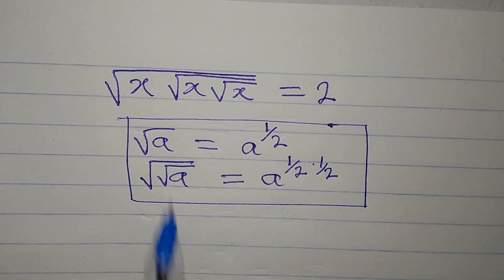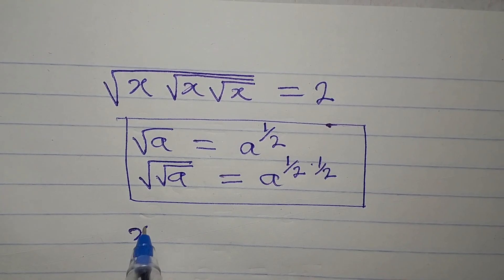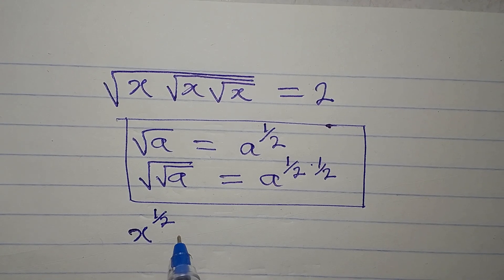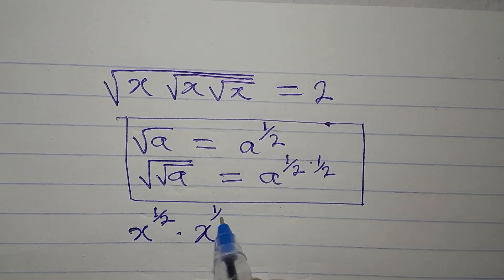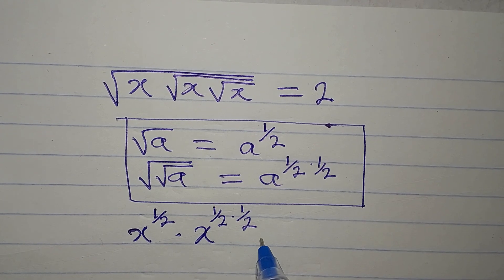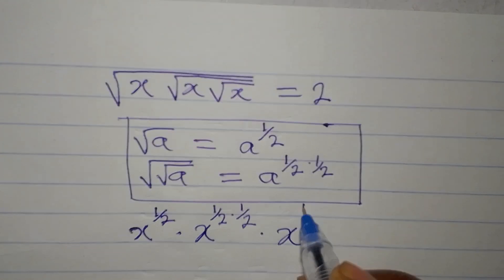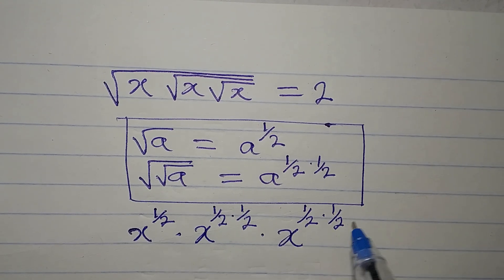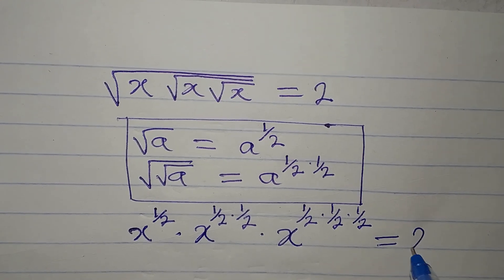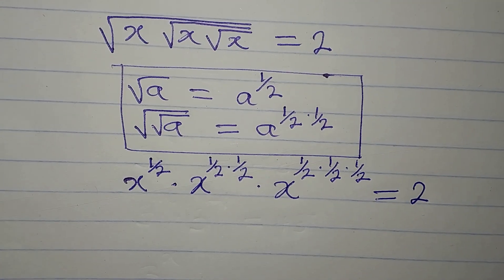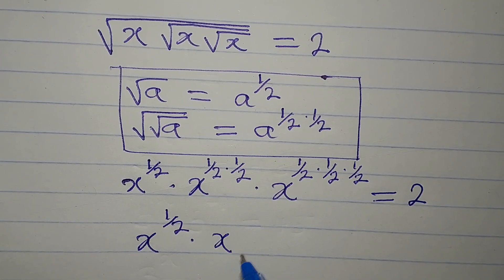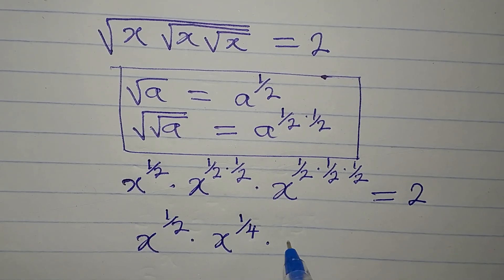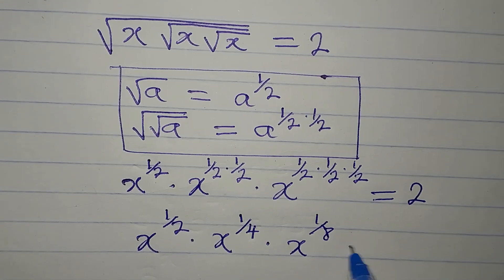The first x is under one square root sign, so it becomes x to the power of 1 over 2. The second x is under two square root signs, so it becomes x to the power of 1 over 2 times 1 over 2, which is 1 over 4. The third x is under three square root signs, giving x to the power of 1 over 8. The whole expression equals 2.